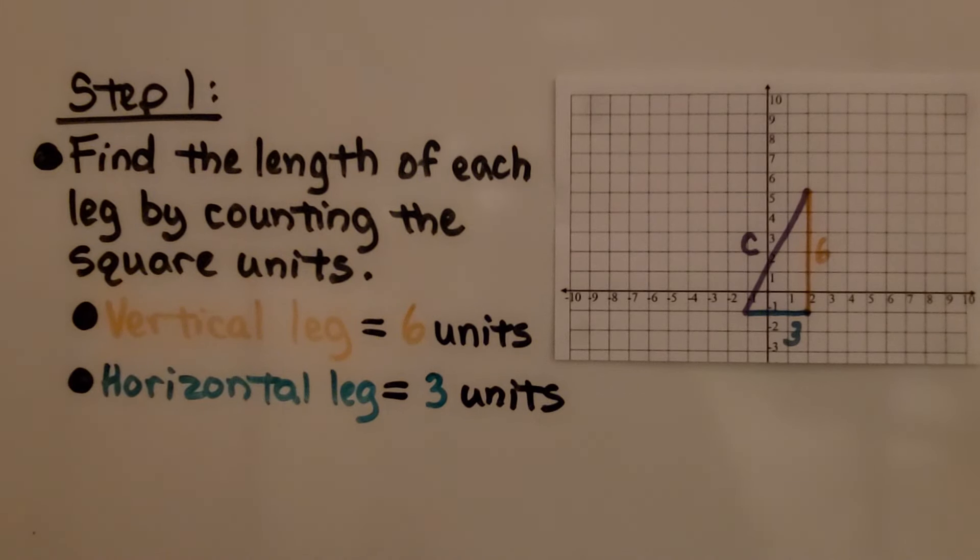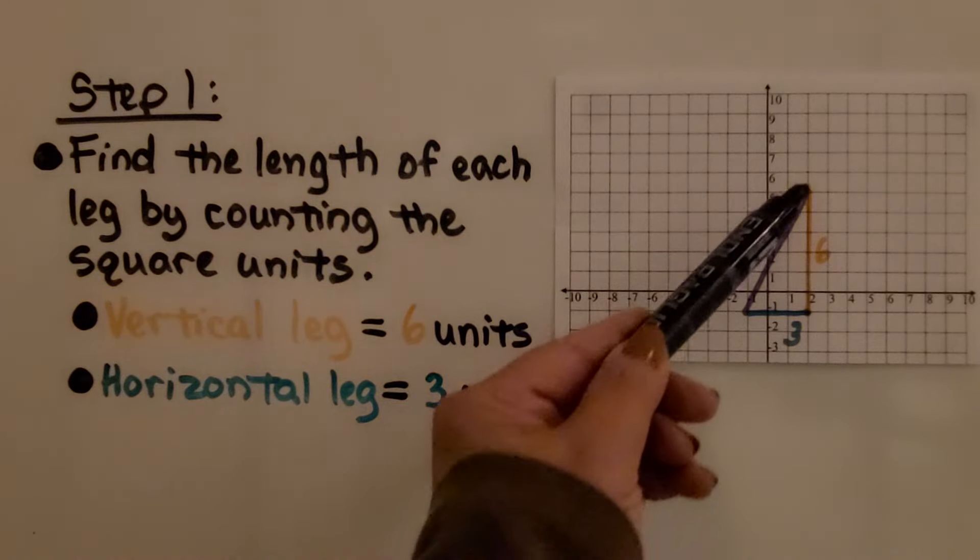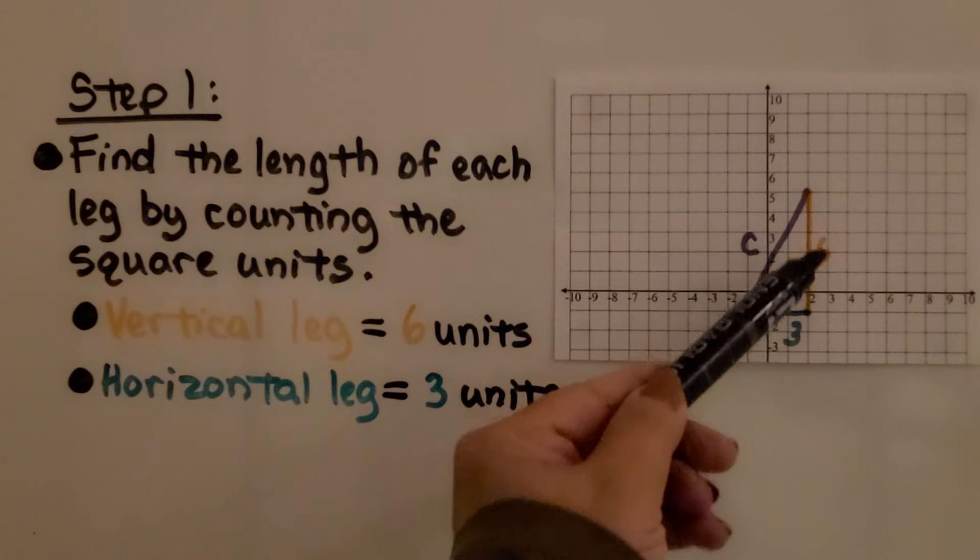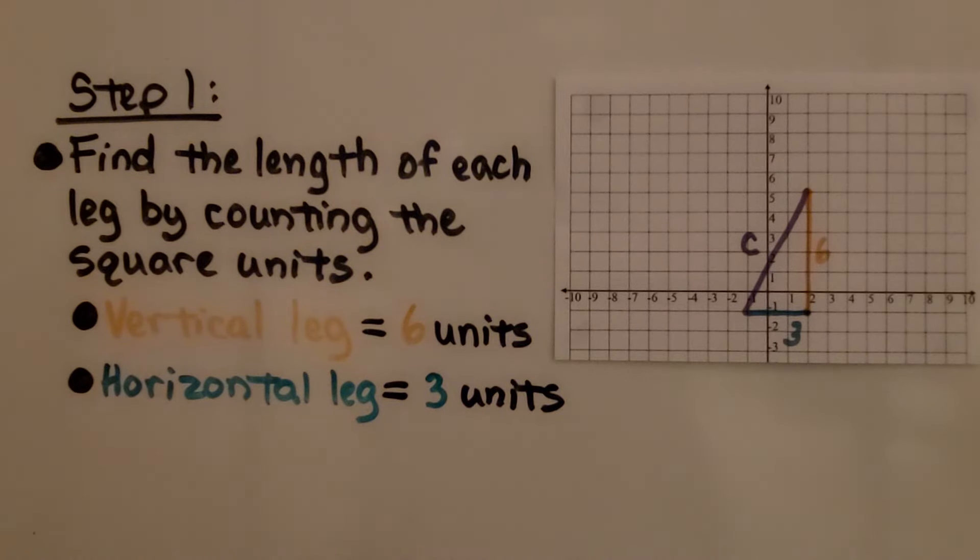For our first step, we find the length of each leg by counting the square units. So for the vertical leg, we have 1, 2, 3, 4, 5, 6, and for the horizontal leg, we have 1, 2, 3.